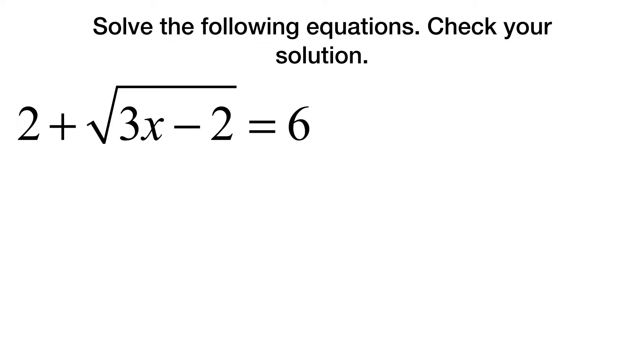The second thing you need to remember is our big goal at first is going to just be to get whatever radical expression we have, like the square root of 3x minus 2, by itself. So for this first question, the way we do that is we take away 2 from each side, meaning we would suddenly have the square root of 3x minus 2, which would equal 4.